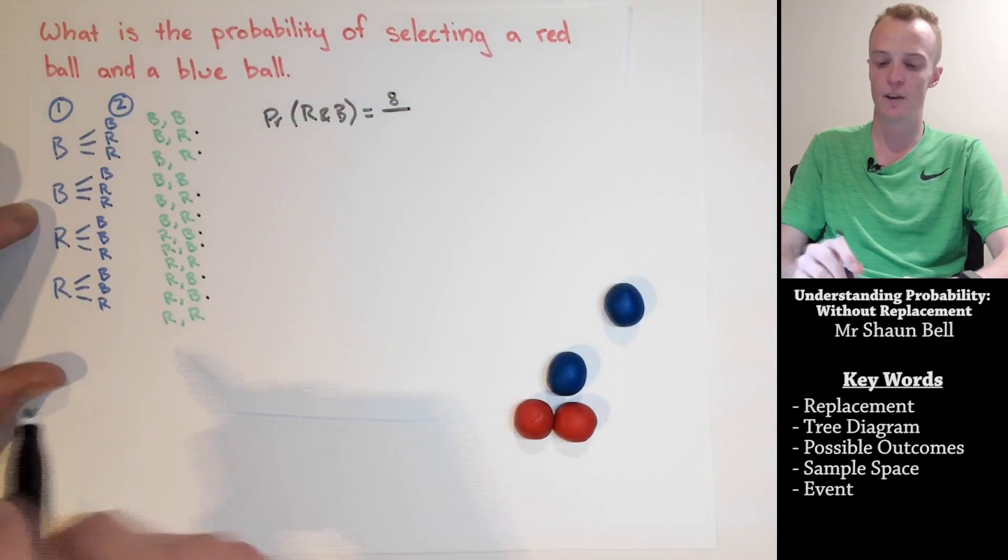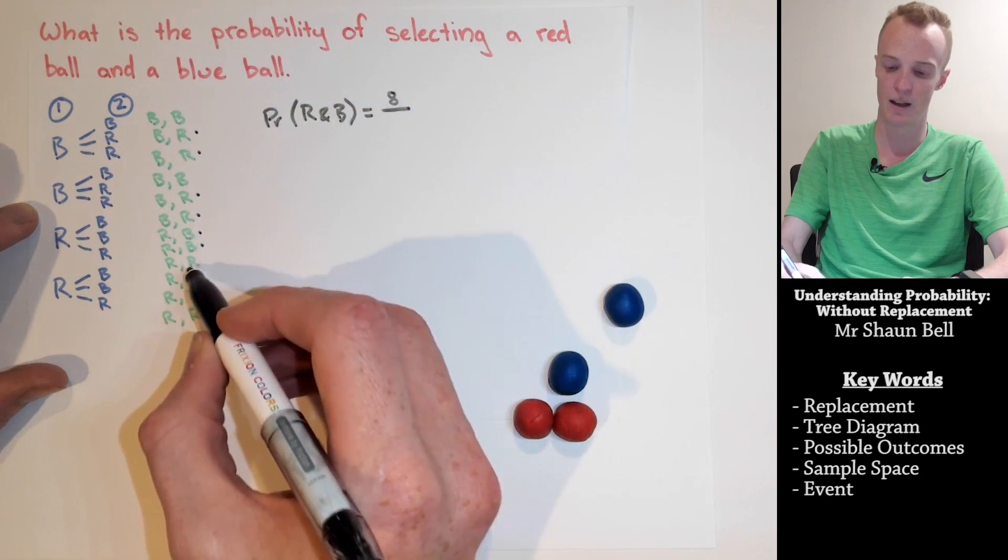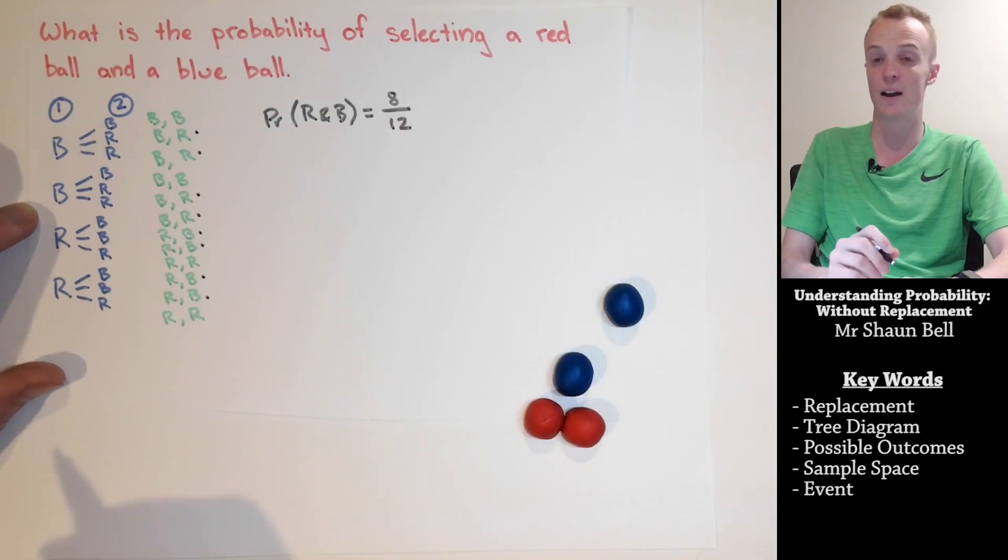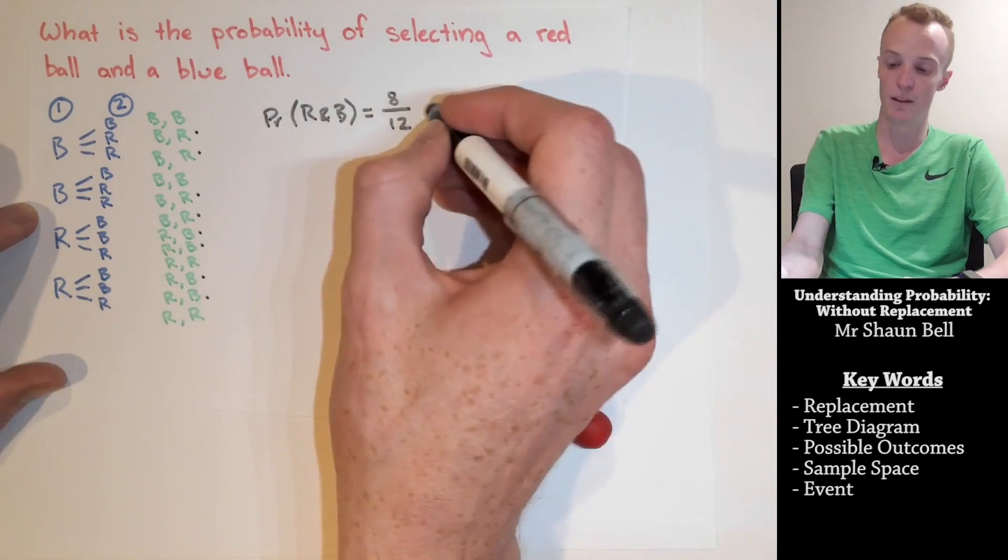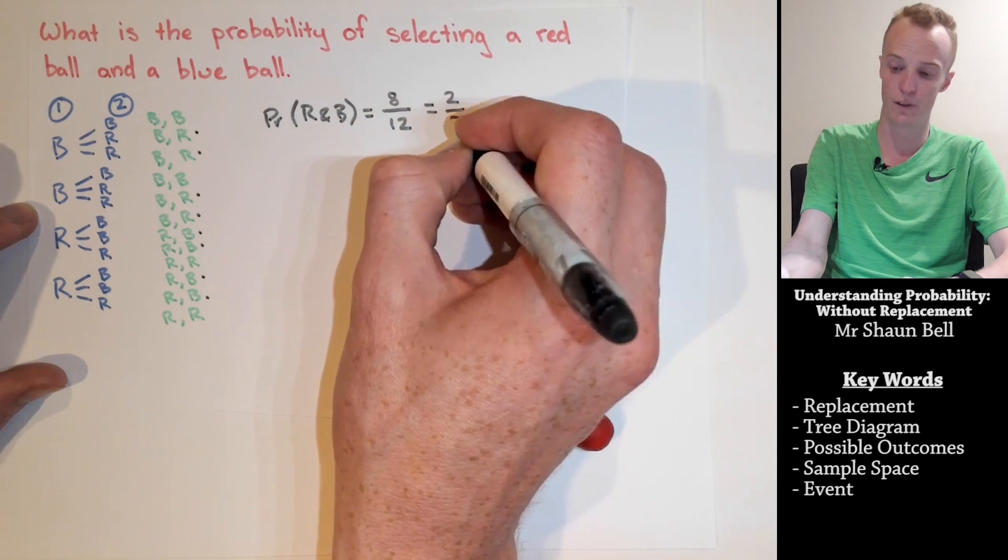Then we need to divide by the total outcomes, so there is 1, 2, 3, 4, 5, 6, 7, 8, 9, 10, 11, 12, so there is 12 total outcomes. Now this probability will now simplify down to 2 over 3.